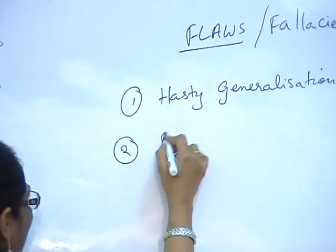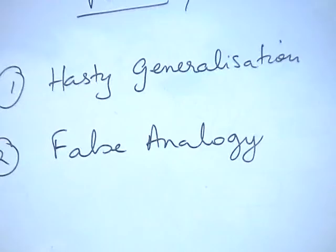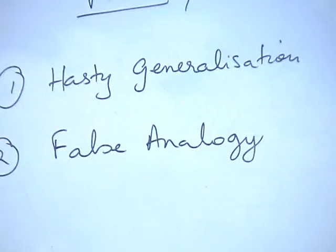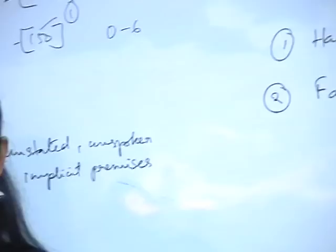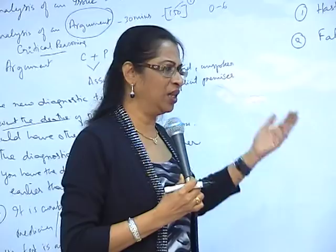The second is what I call as a false analogy — the flaw of false analogy. What is an analogy? Analogies are parallels — parallels that are drawn either to support a fact or to weaken a fact.